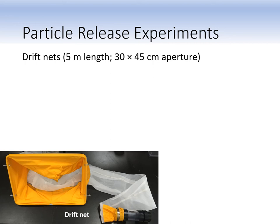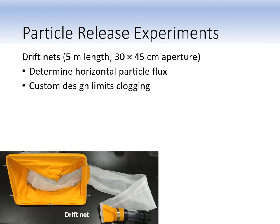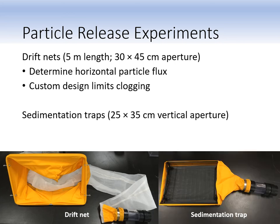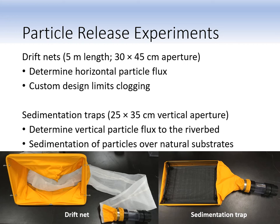The drift nets were designed to determine the horizontal flux of the microbeads, and they were also designed to minimize clogging, which is problematic for determining accurate estimates of particle flux. The sedimentation traps feature a novel design and were used to determine the flux of the particles to the riverbed. The sedimentation traps can measure flux over a natural substrate, as the black tray pictured on the right can be filled with substrate from the river and can be removed to flush the settled particles into the collection bucket at the end. The process of collecting the particles is sort of like panning for gold, and any particles caught are counted and used to determine particle flux at each location.